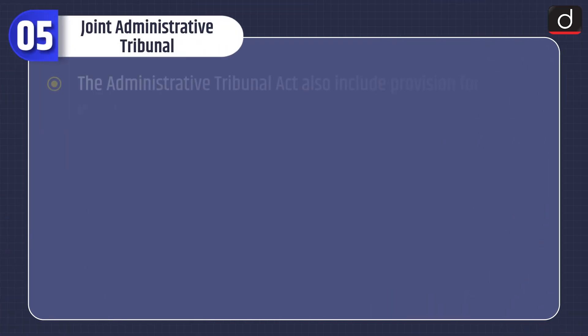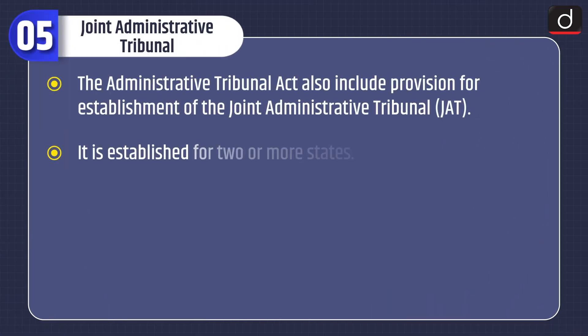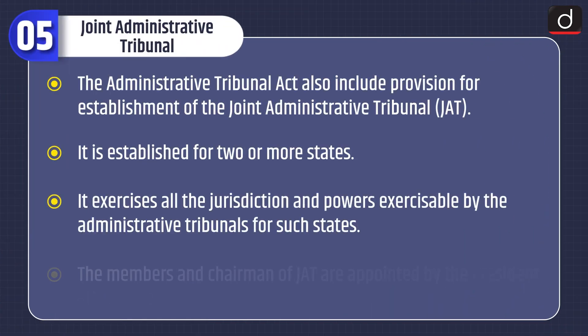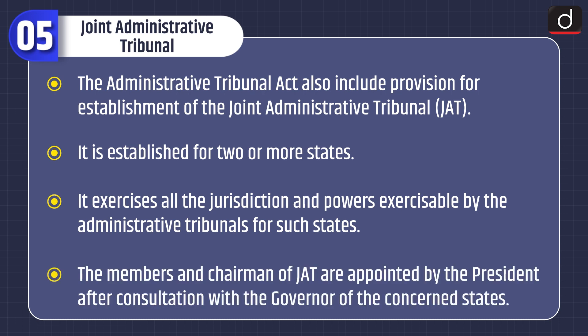The Administrative Tribunal Act also includes provision for establishment of the Joint Administrative Tribunal or JAT. It is established for two or more states and exercises all the jurisdiction and powers exercisable by the Administrative Tribunals for such states. The members and chairmen of JAT are appointed by the President after consultation with the Governor of the concerned states.